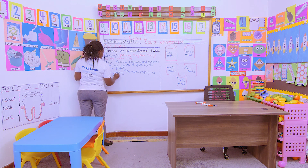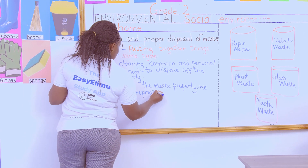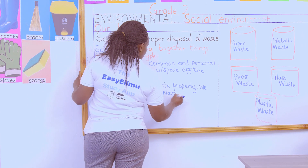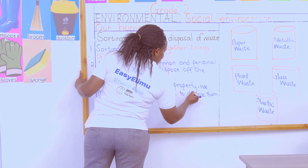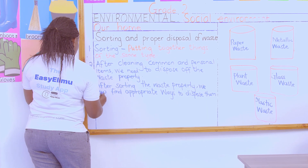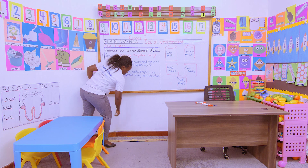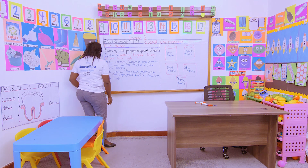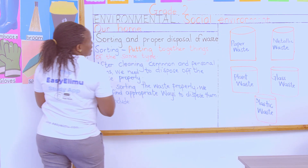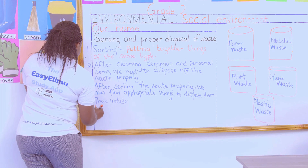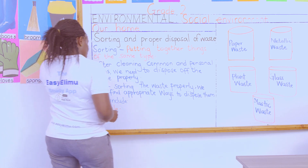After sorting the waste properly, we now find appropriate ways to dispose of it. When I find out that I have paper and I don't feel like burning — burning is not the right way — I can recycle it. When you recycle paper, it can be used to make paper mache, and paper mache can be used for modeling. So you can recycle waste that can be recycled.